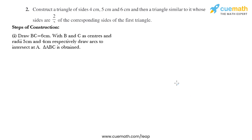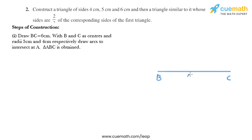So let's draw BC equal to 6 centimeter. Now I'll put the compass at B and measure the opening as 5 centimeter and draw an arc. Again, we'll put the compass at C and measure the opening as 4 centimeter and draw another arc that intersects the first arc.